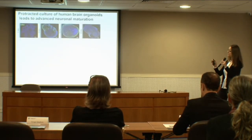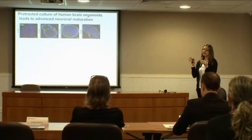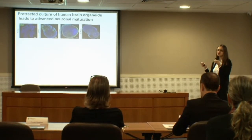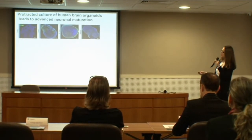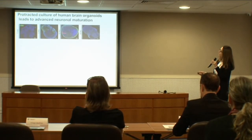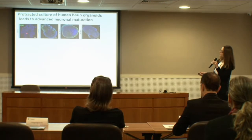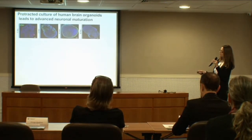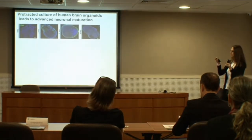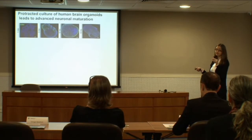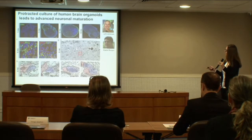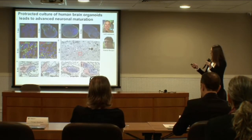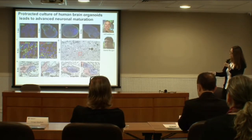These cells look very mature from a transcriptional point of view, so we also looked at structural features expressed in neurons such as synapses. Using synapsin-1 as a presynaptic marker, we found that synapsin-1 expression increases over time — at one month there is no expression. This is consistent with what happens in the human fetal brain. We found different kinds of synapses both GABAergic and glutamatergic, and in collaboration with the Bhanu lab we performed electron microscopy.